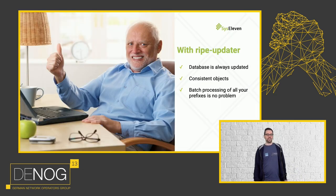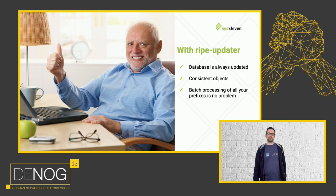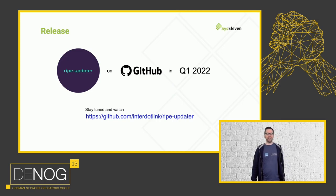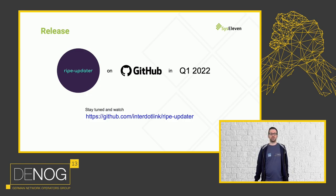You will receive an email notification with all the details of what happened. To recap: you will now have a consistent and always up-to-date RIPE database, and you can focus on other work. I'm very happy to announce that we are planning to release RIPE Updater in the first quarter of next year. If you want to keep track of this, you can already watch the displayed repository.